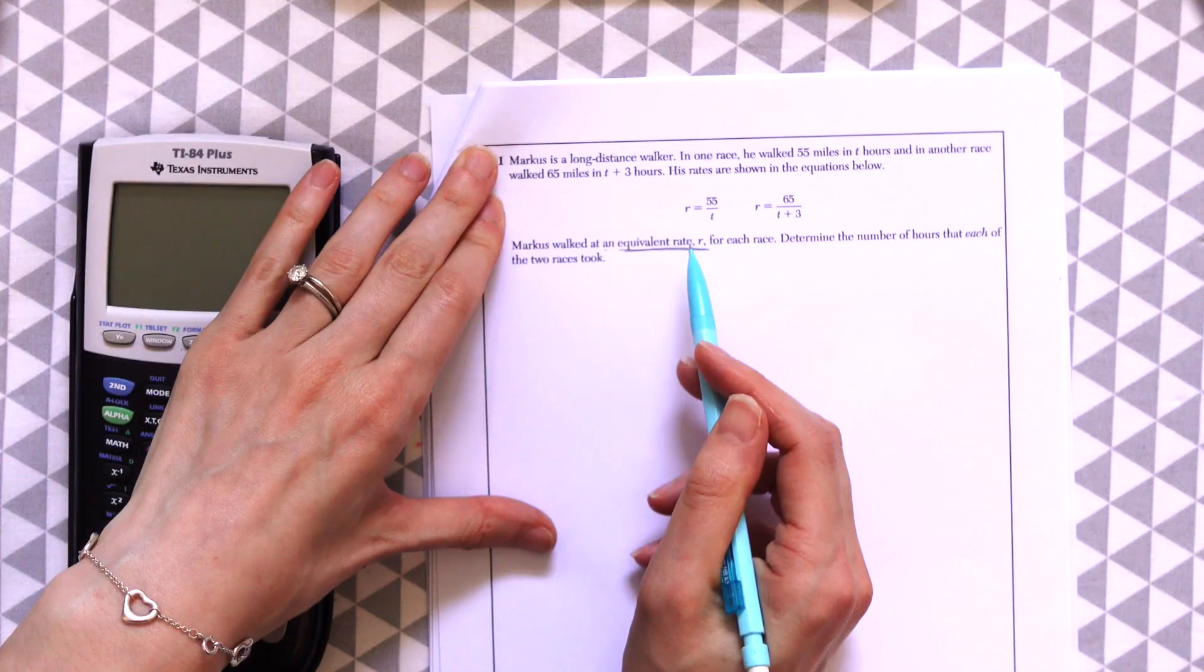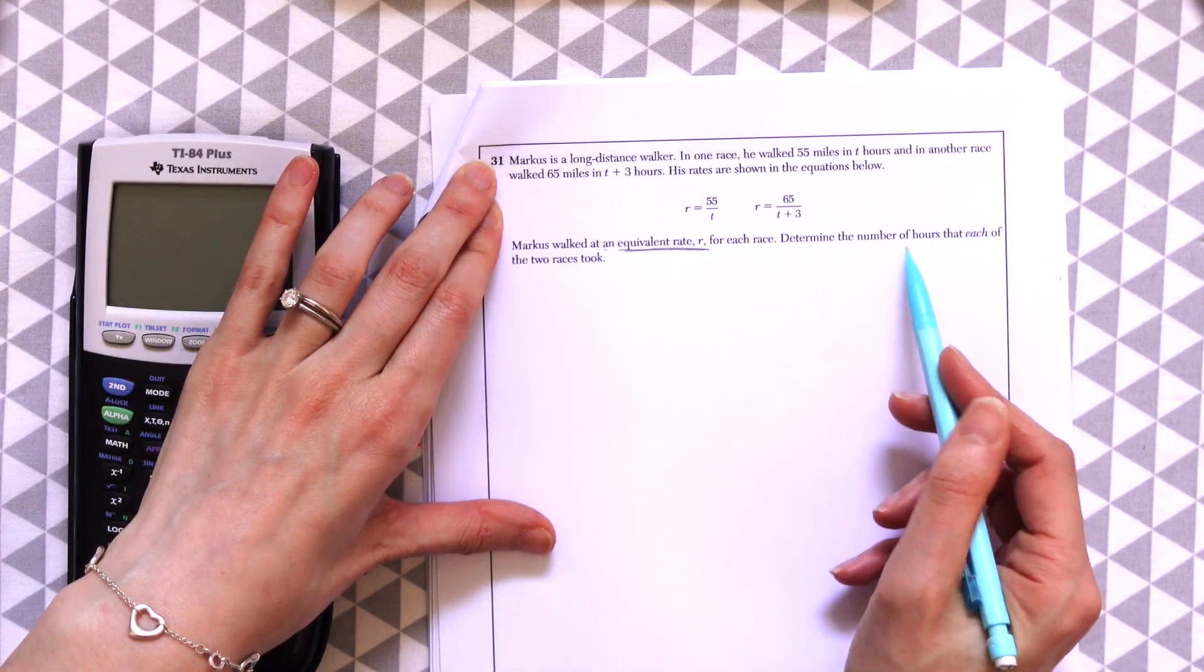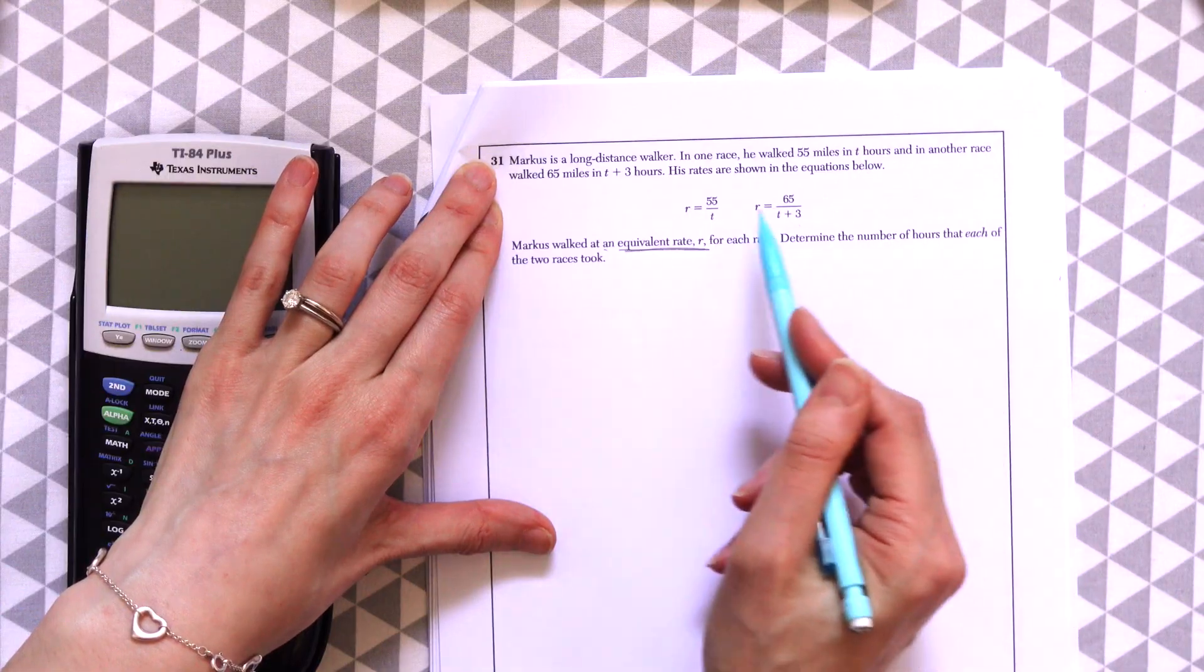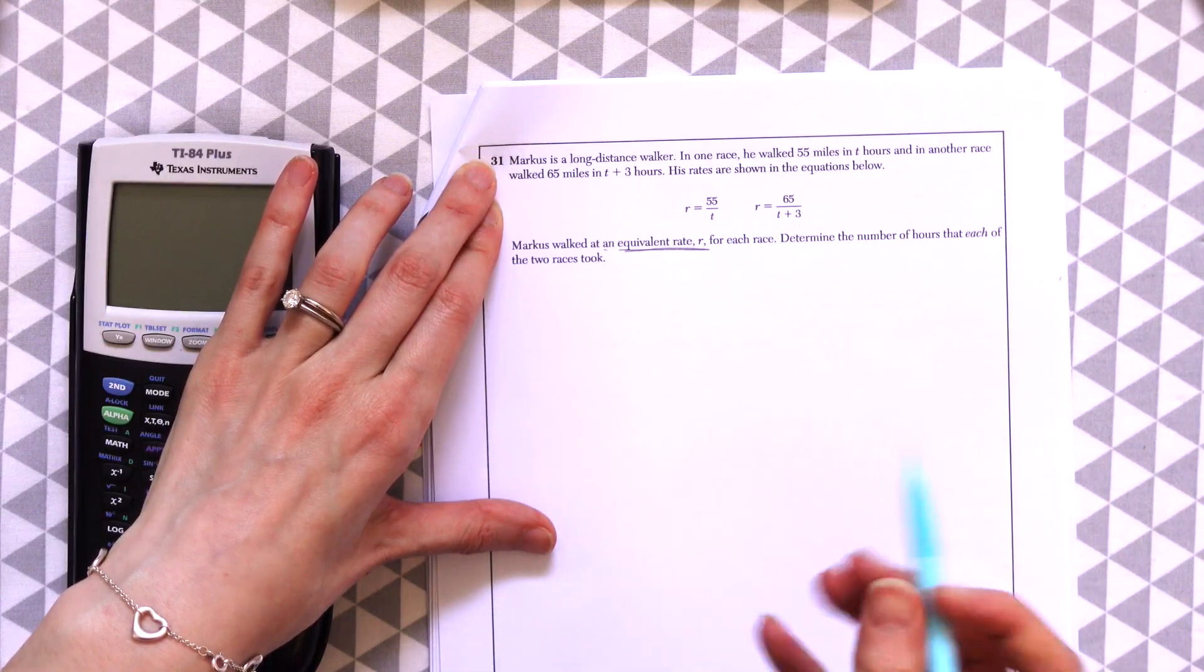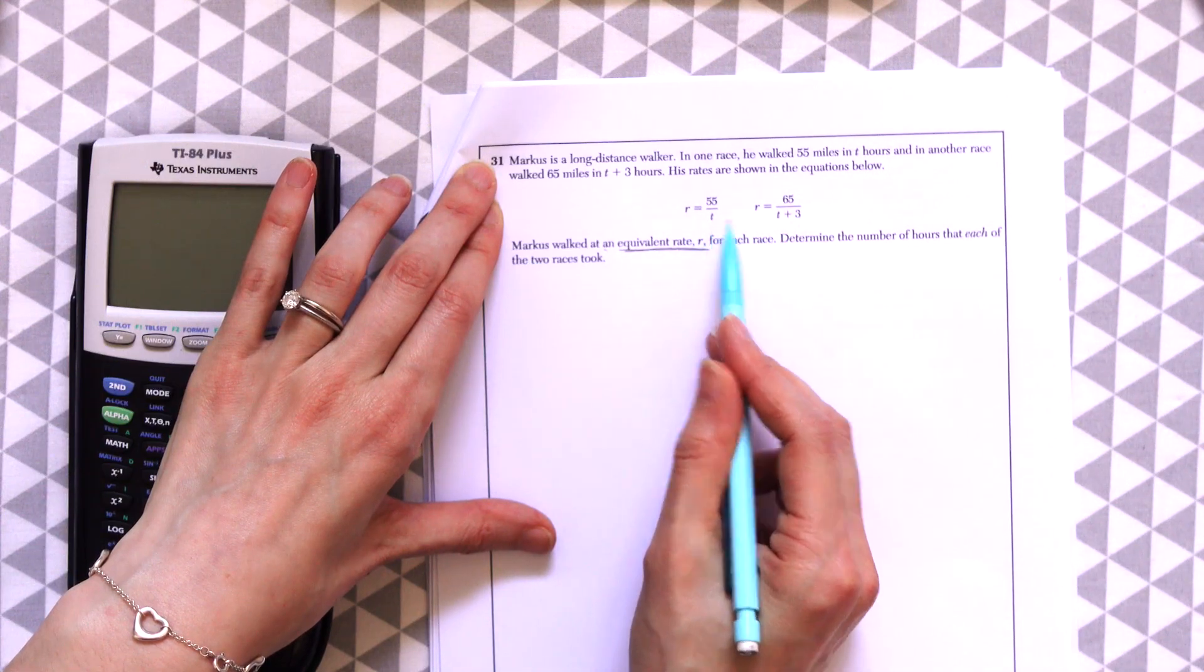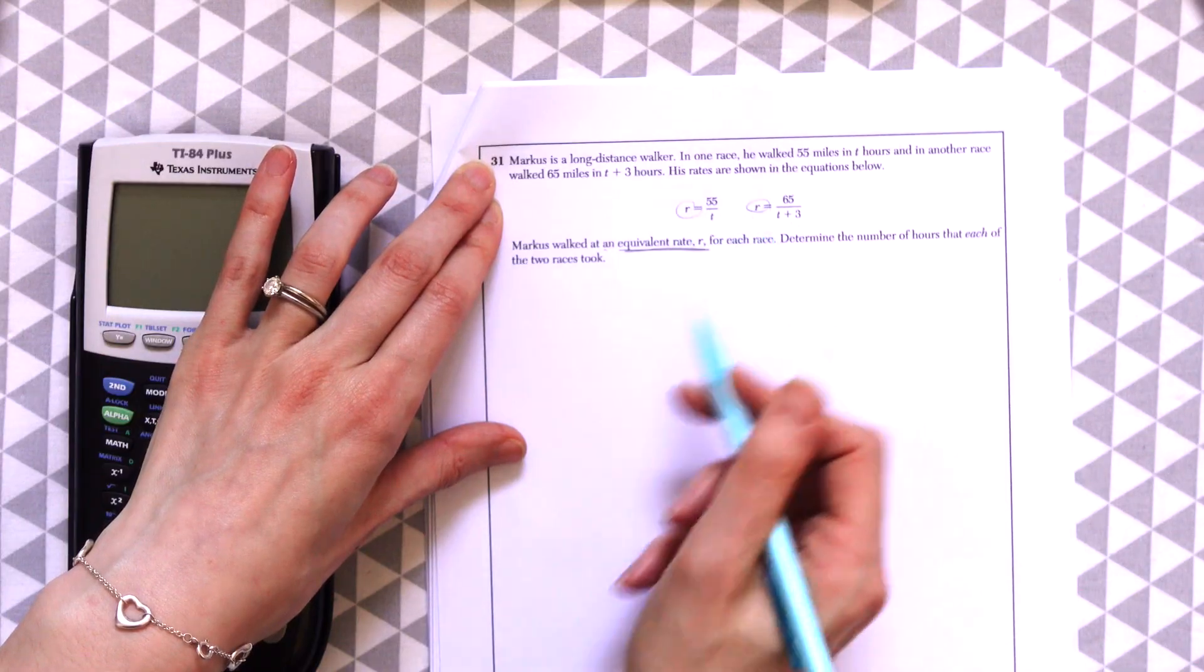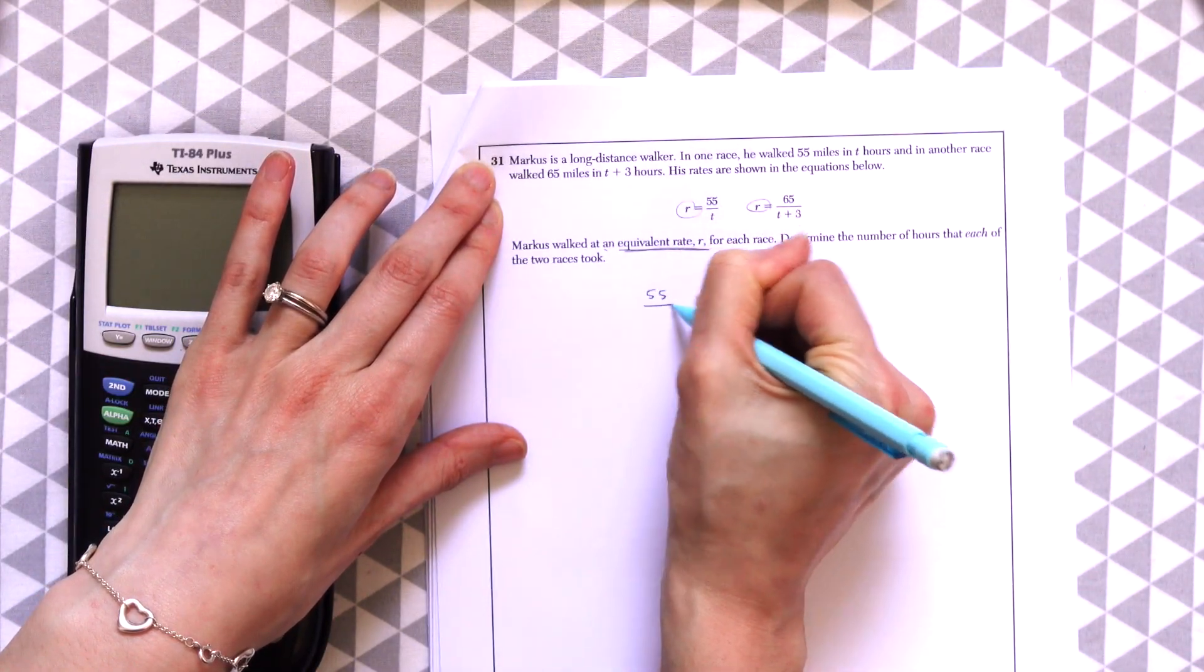So basically what this question is saying is that these r's are equal to each other, but then they want us to find the number of hours each took. So the rates are equal, but the hours are different. And they want us to find the t and then the t plus 3. Since they're equal, we can actually just set these equal to each other and then do cross multiplying.